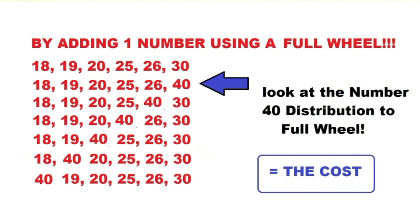The number 40 is distributed to all the combinations. We will use our primary key number that was picked — the sixth number that was picked — and distribute 40 for a full wheel. So by adding one number, we have used the full wheel capacity of seven numbers: 18, 19, 20, 25, 26, and 30.